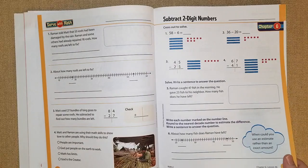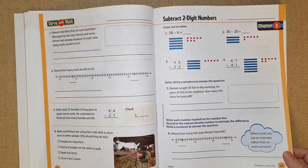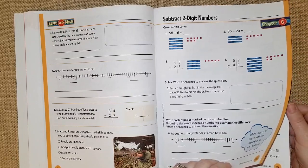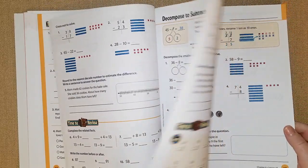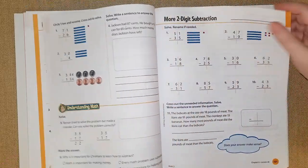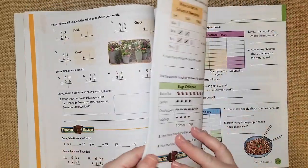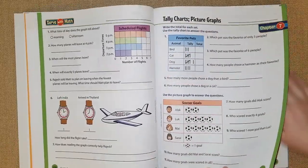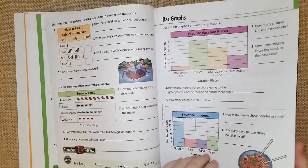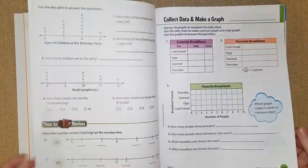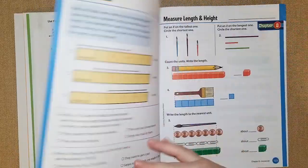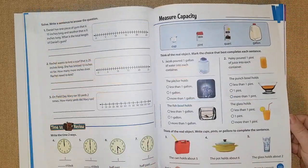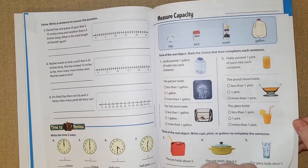This is chapter six where they're going to learn subtract two digit numbers, so they were learning how to add two digit numbers and then chapter six they're learning how to subtract it. And in chapter seven they're doing tallies, charts and picture graphs, bar graphs. These are so fun, my daughter loves doing these and data. Chapter eight they're going to be doing measuring length and measuring capacity, they're going to go over cups and pints and quarts and gallons.